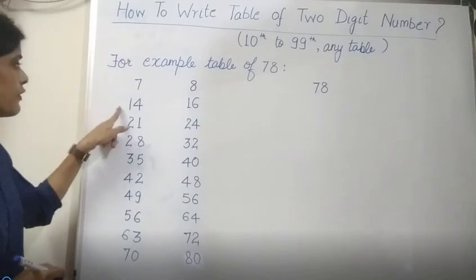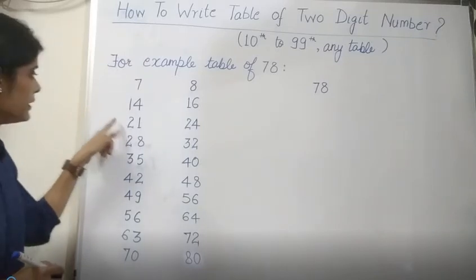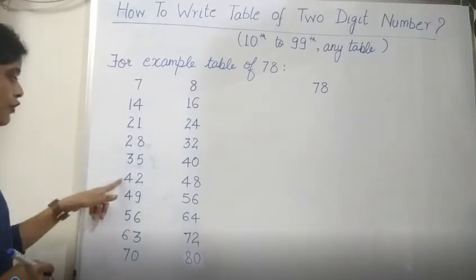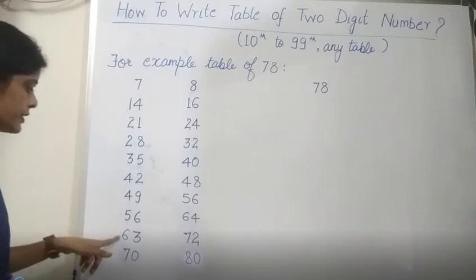Like 7 table: 7, 14, 21, then 28, 35, 42, 49, 56, 63 and 70.